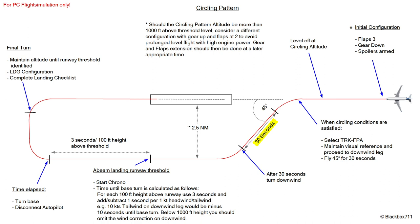I would also use the autopilot as much as possible to reduce workload in the circling. You'll want to use it until you start the final descent to the landing runway — in this case, for example, on the base leg.